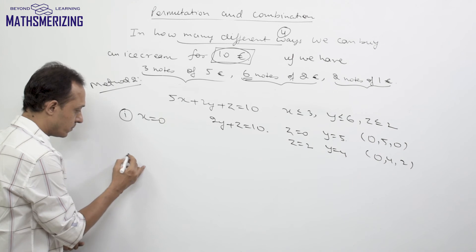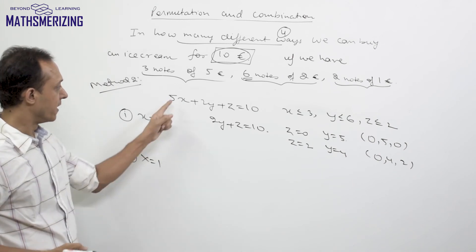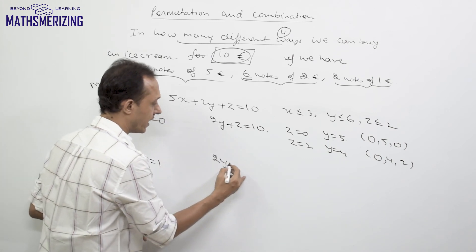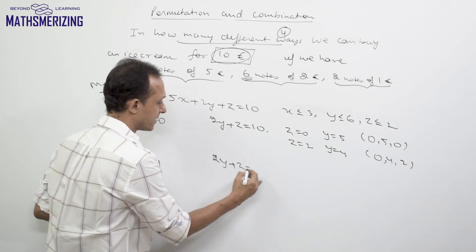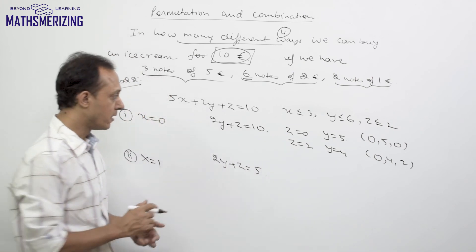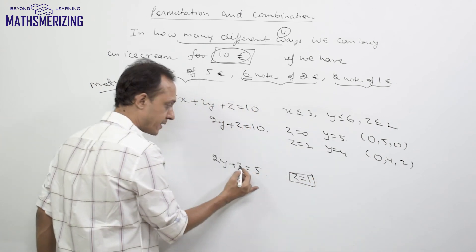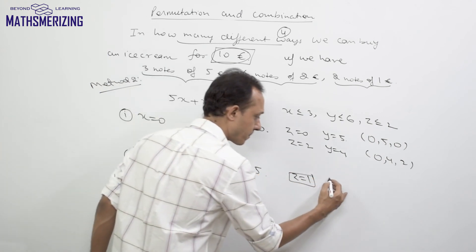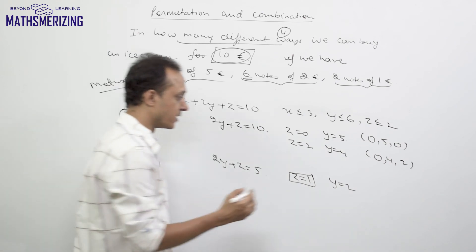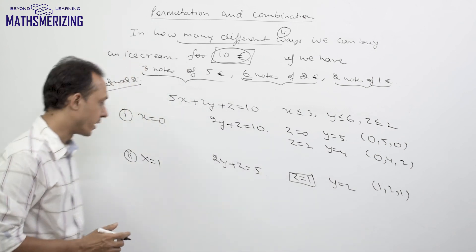Case 2: x = 1. Substituting gives 2y + z = 5. Here z must be odd. The only valid possibility with z ≤ 2 is z = 1, which gives y = 2. So there is exactly one solution: (x, y, z) = (1, 2, 1).